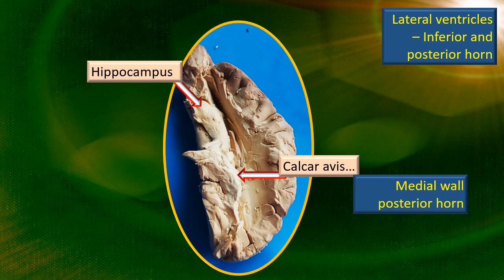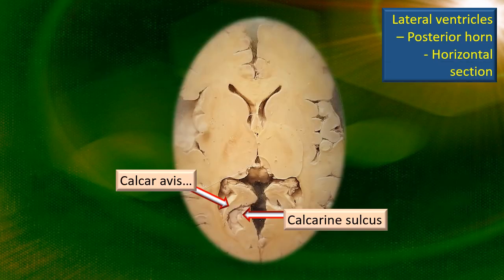This is a deceptive specimen. You can see the lateral ventricles — both the inferior horn and the posterior horn. The hippocampus can be seen in the anterior part of the inferior horn, and in the posterior horn the bulge that you see is the calcar avis, which is the medial wall of the posterior horn. This is yet another horizontal section, much below the level of the interventricular foramen. Here, both the calcarine sulcus and the calcar avis are very prominently seen — you can see the depth of the calcarine sulcus, because of which the elevation raised is the calcar avis.